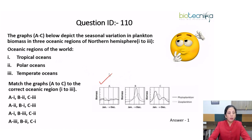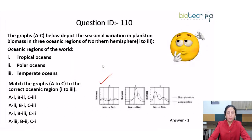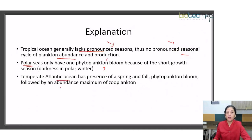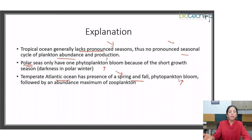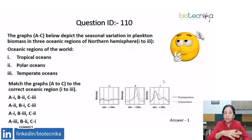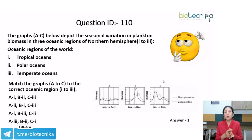Moving to polar oceans: they have one phytoplankton bloom because of the short growth season and the darkness in the polar winter. That is what is shown in figure B — there is one bloom in phytoplankton growth — and that is why this is matched with polar oceans like the Arctic Ocean. Moving to figure C: this represents temperate oceans such as the temperate Atlantic Ocean, which have both a spring and fall season. Because of those discrete seasons, phytoplankton blooms can be observed.